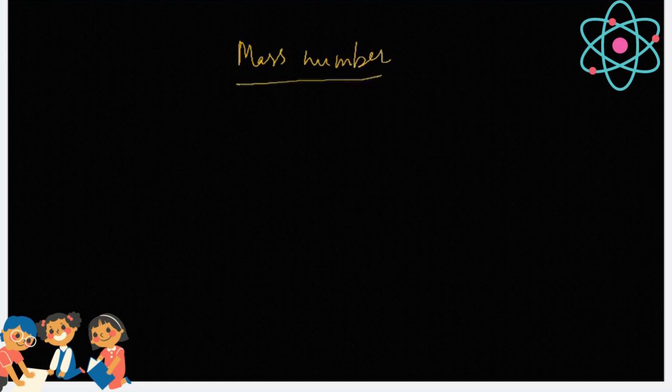Now, we will move on to another important term which is mass number. So, what is mass number? Mass number is the number of protons and the number of neutrons present in the nucleus of an atom.